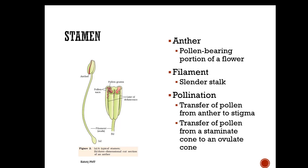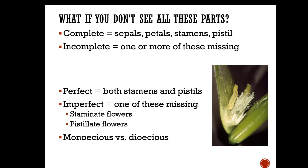The stamen consists of the anther — that's the pollen-bearing portion of the flower. You can see a close-up of the stamen here. The filament is the slender stalk. Pollination occurs when there's a transfer of pollen from the anther to the stigma, or from a staminate cone to an ovulate cone in conifers.